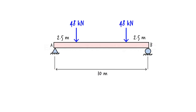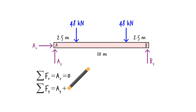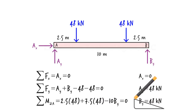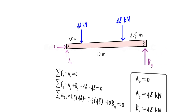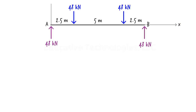First, we need to calculate the support reactions. The free body diagram for the beam has three unknown reaction forces. Using the static equilibrium equations, we determine: Ax equals 0, and Ay equals By equals 48 kilonewtons. Note that the two applied loads divide the beam into three segments, meaning we need three shear equations and three bending moment equations — a pair for each segment. We place the origin of the x-axis at the left end of the beam, and for each segment, cut the beam at some distance x from the origin, draw the free body diagram, and write equilibrium equations to express shear and moment in terms of x.